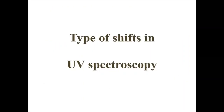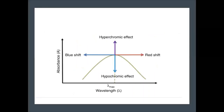Moving next to the shifts in UV spectroscopy. Normally in UV spectroscopy we observe four types of shifts. A diagram is plotted with absorbance on the y-axis versus wavelength (lambda max) on the x-axis. In this graph, four shifts are observed: hyperchromic, hypochromic, blue shift, and red shift.